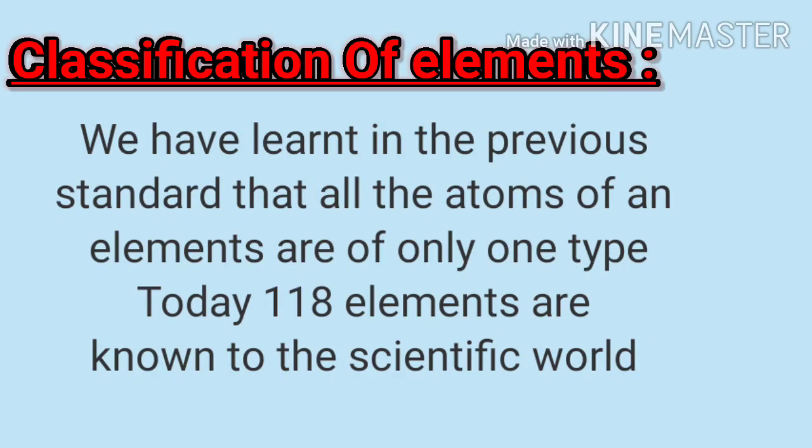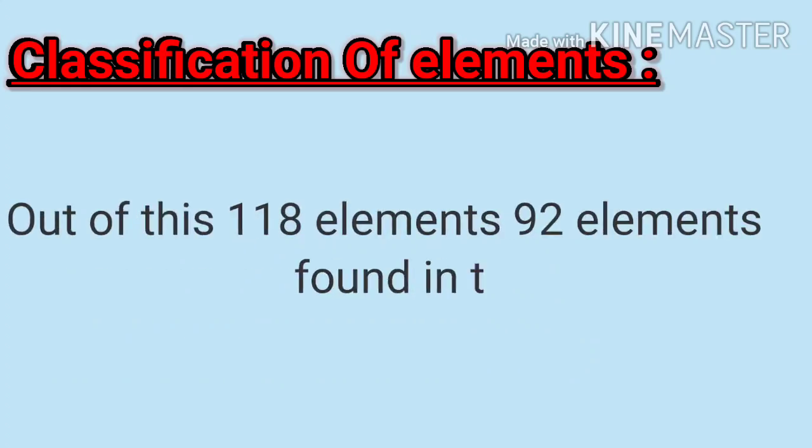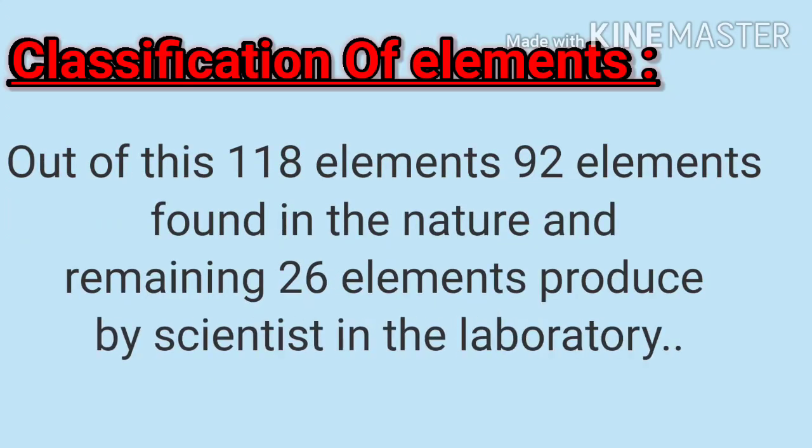Classification of elements: We have learned in the previous standard that all the atoms of an element are of one type. You should know that matter contains different types of atoms. Today 118 elements are known to the scientific world. Each of these 118 elements has unique properties and distinct characteristics.